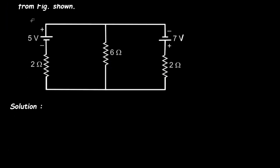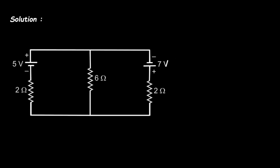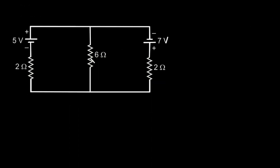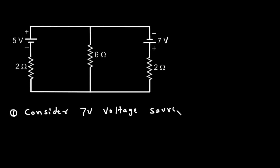First of all, we will take this circuit. We have to find the current by using superposition theorem. As we can see, there are multiple sources here. So, step number 1 is to consider the 7V voltage source and turn off all other sources.